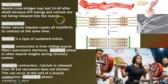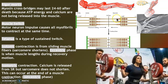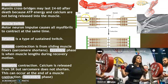Rigor mortis — that is the stiffness of death, 24 to 60 hours after death. Now that we understand actin and myosin, we can see that without ATP energy, all of this is going to lock up.